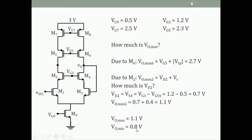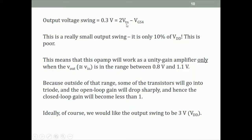So the output voltage swing is 1.1 − 0.8 = 0.3 volts. In general expression form this is 2Vtn − Vgs4 = 2(0.4) − 0.5 = 0.3 V. This is a really small output swing for a general purpose operational amplifier — only 10% of the supply. This means the op-amp in unity gain configuration works only in the range of 0.8 V to 1.1 V.